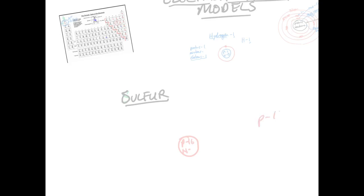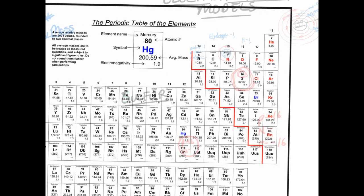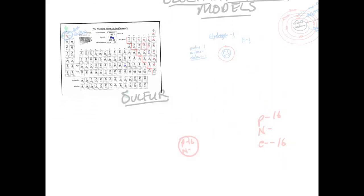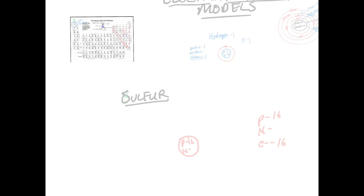So sulfur has 16 protons and 16 electrons. For neutrons, we go back to the periodic table: the most common isotope has a mass of 32. Since 16 protons are already there, we need another 16 neutrons to account for the total mass of 32. So sulfur has 16 neutrons.